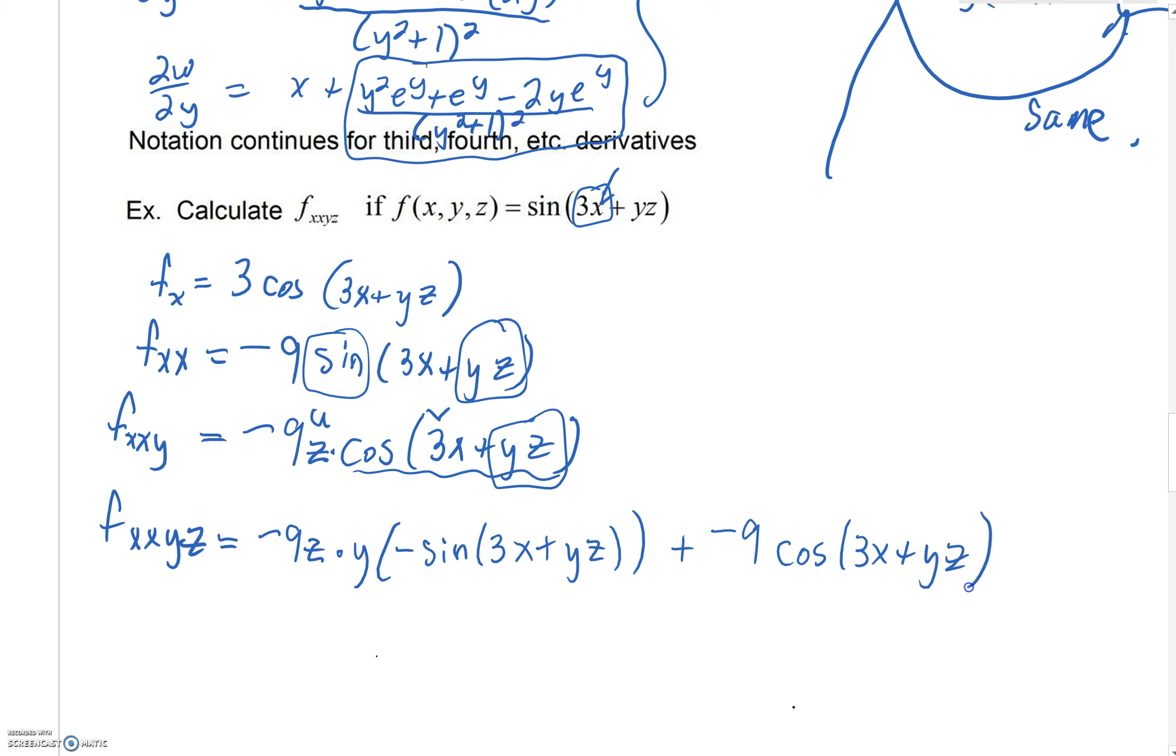Just have to clean this up. A negative times a negative, of course, is going to be a positive. So we'll have a positive 9zy sine of 3x plus yz.